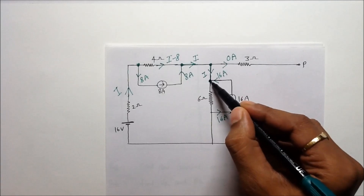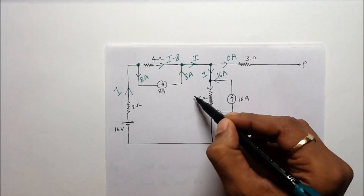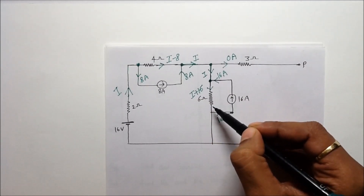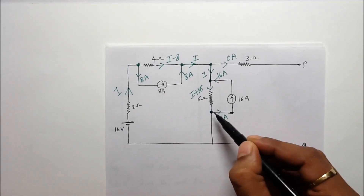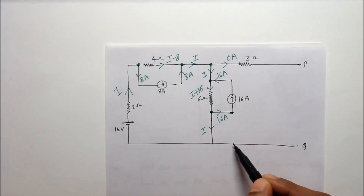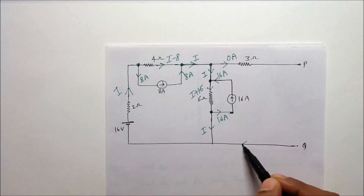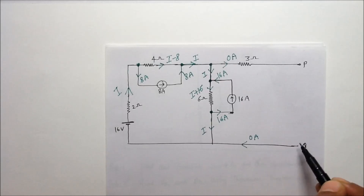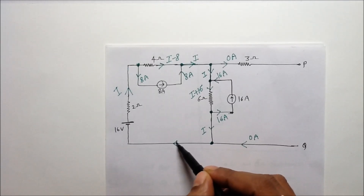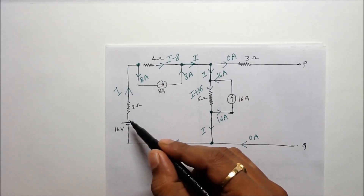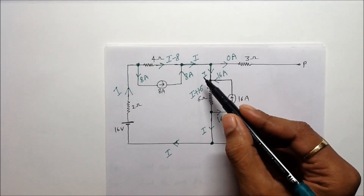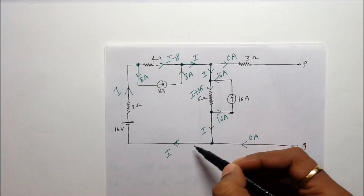If you apply KCL at this node, you can say that current i ampere will flow in this branch. If you apply KCL at the next node, i plus 16 ampere current will flow in this 3 ohm resistance. If you apply KCL at this node, i ampere current will flow in this branch. The current in this other branch is 0 ampere because there is an open circuit. Now, to find the current i, I am going to use KVL in this loop.